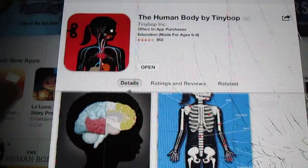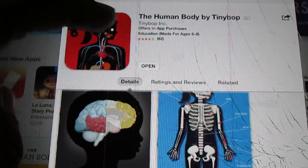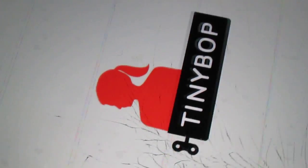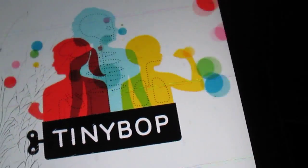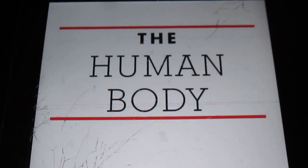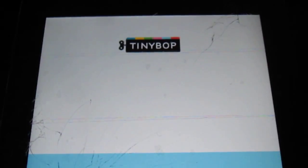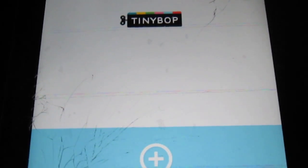Now this is supposed to be for ages six to eight, so we will see exactly how age appropriate it really is. Here we go, The Human Body by Tinybop. All right, so we stopped at this screen, so I'm going to assume I have to push the X.